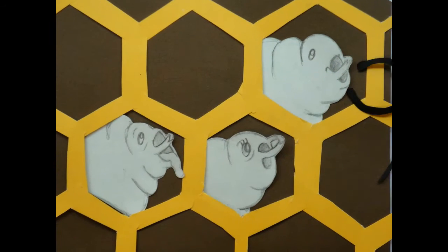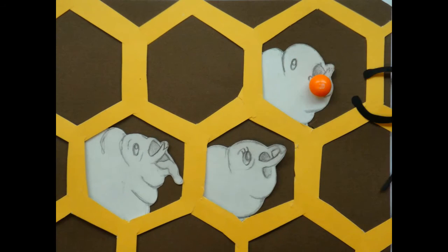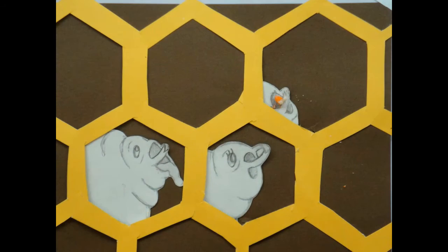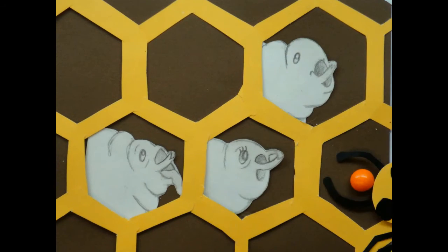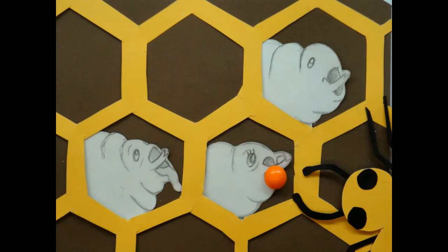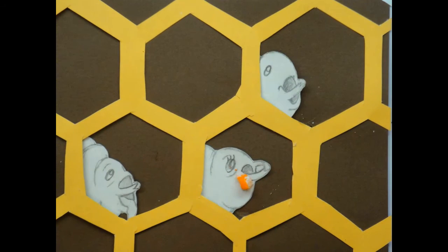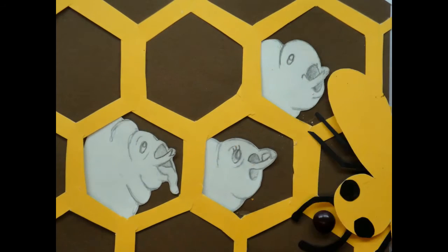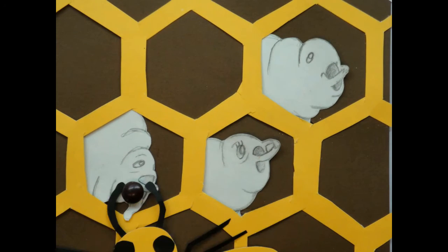Here we see the honey bee larvae in their honeycomb homes. Larvae fed the worker jelly develop into worker bees, whereas larvae fed the royal jelly develop into queen bees.